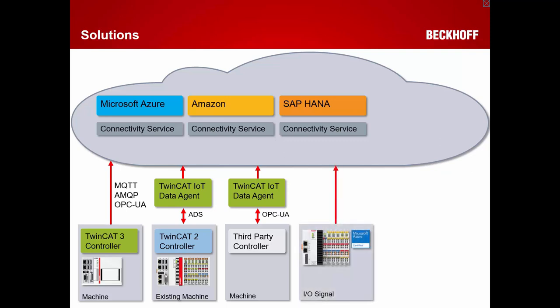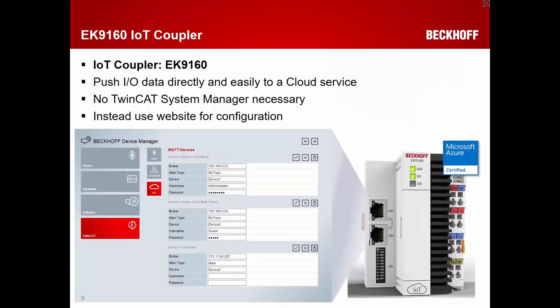Last year at the Hanover trade show, Beckhoff announced the IoT Coupler, the EK9160. It's a plain hardware device with no TwinCat on board, configured entirely via a built-in website — similar to a DSL router interface. On the EK9160, you can configure message brokers to communicate with, including the Microsoft Azure IoT Hub. This device is also Microsoft Azure certified.